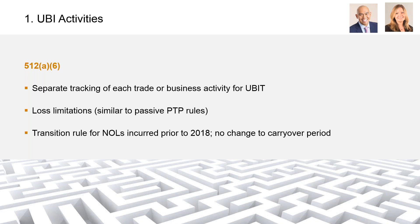When thinking about unrelated business income for schools, the most typical examples are rental income on real estate, advertising or sponsorship revenue — such as ads in yearbooks rather than sponsorships — debt-financed income from rentals, and K-1s from investments. If you have any of these, this new siloing rule could apply to you.